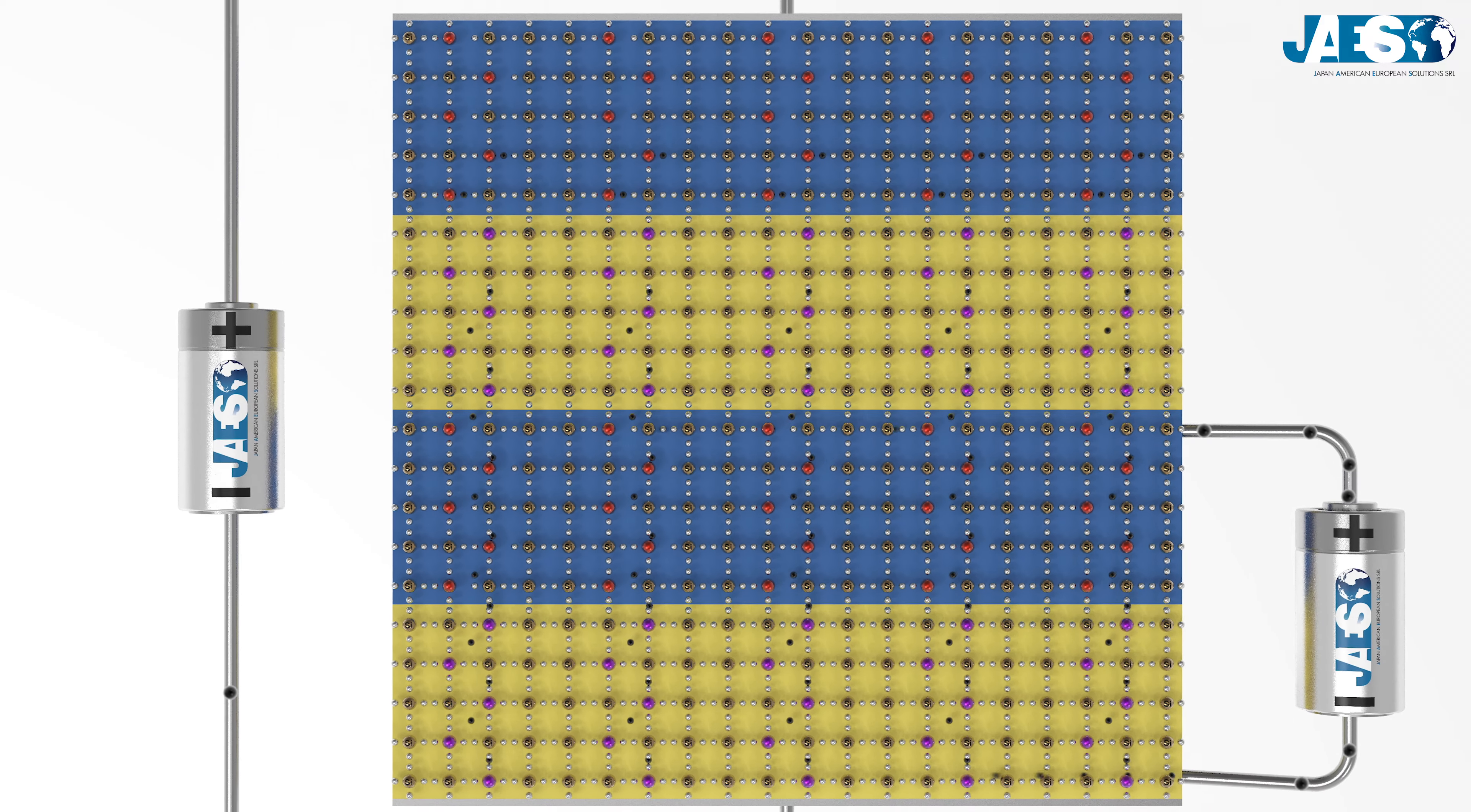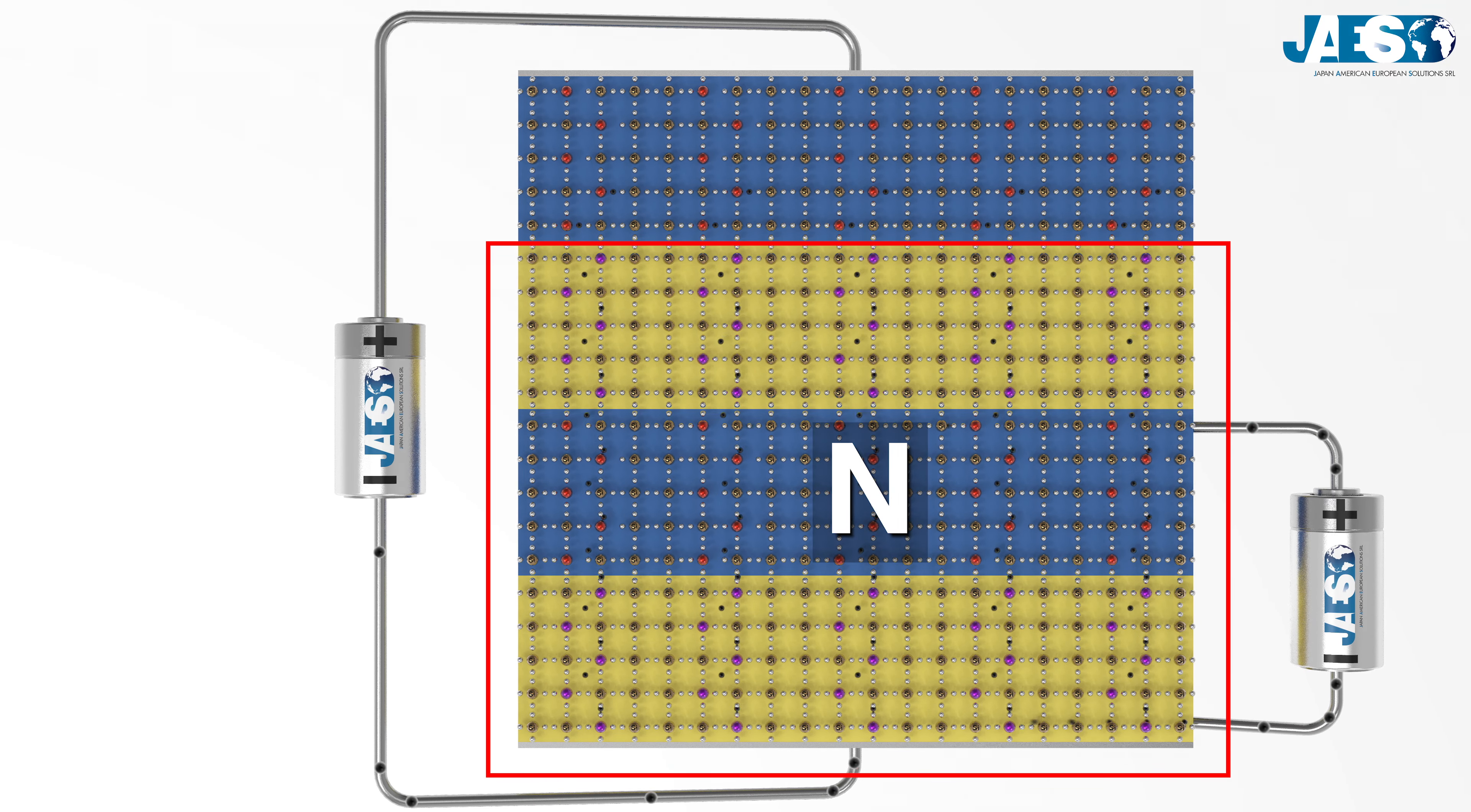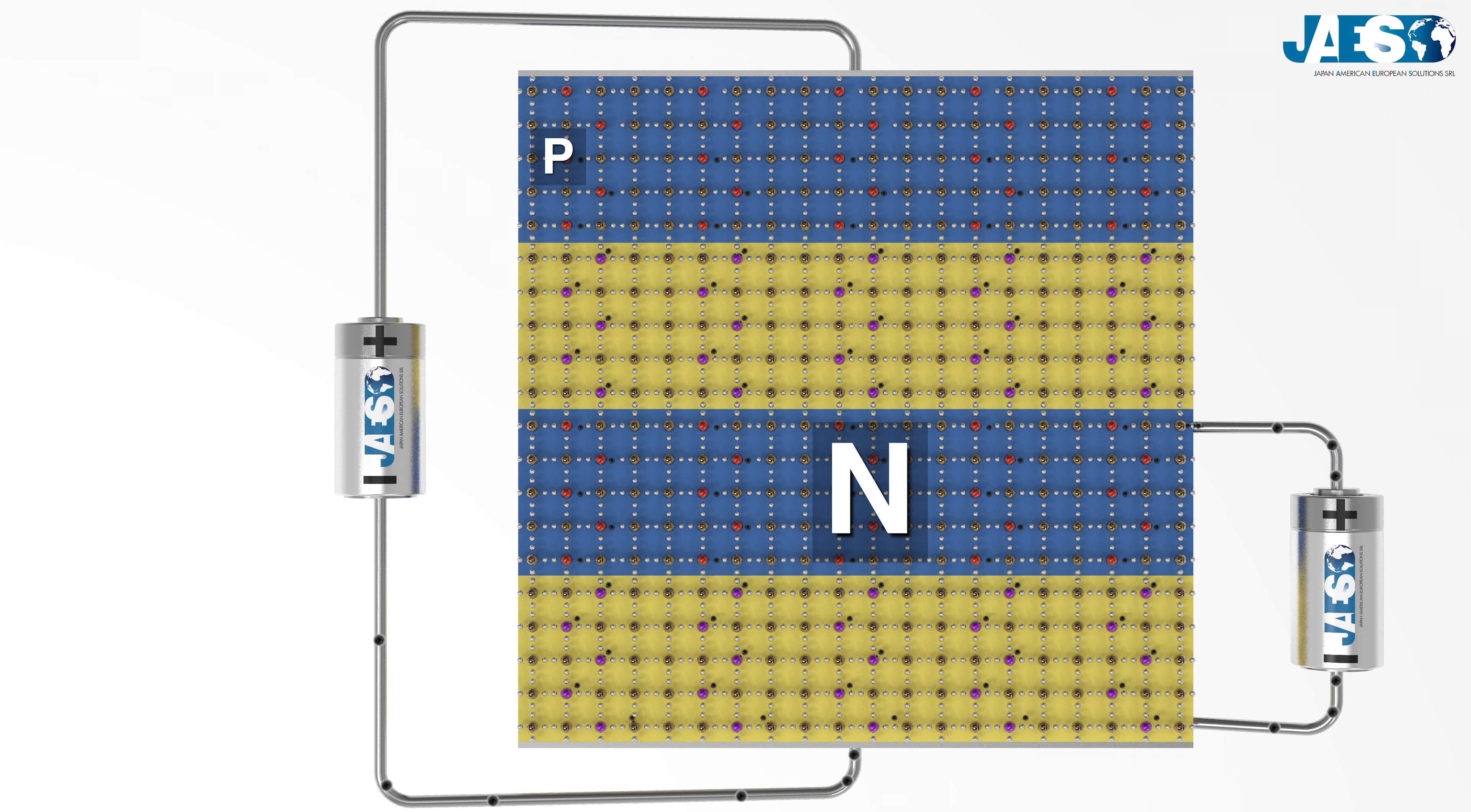The three lower layers now look like a large N semiconductor, and the electric current can cross the last P-N junction and close the circuit.